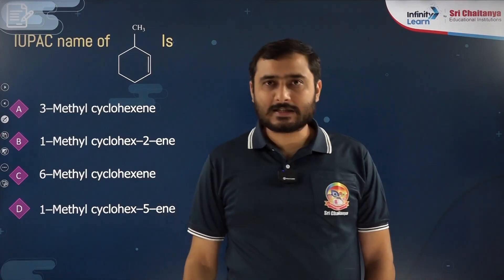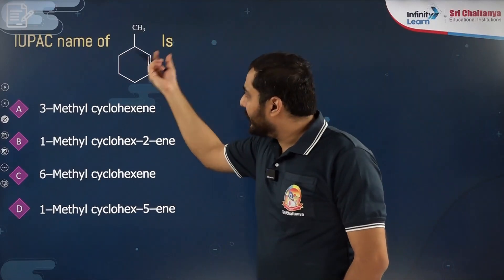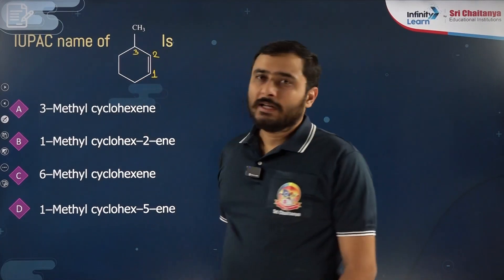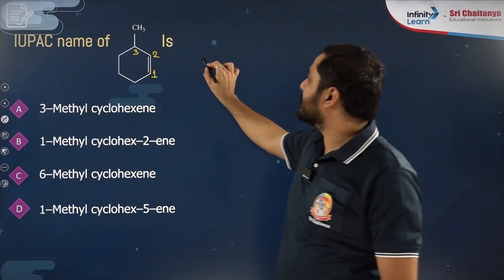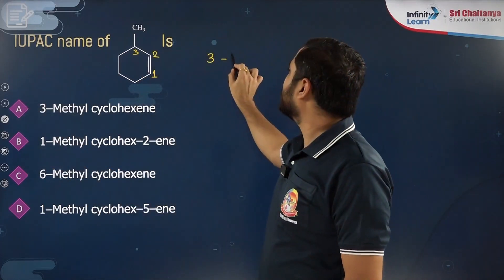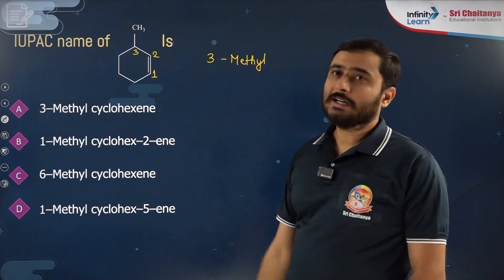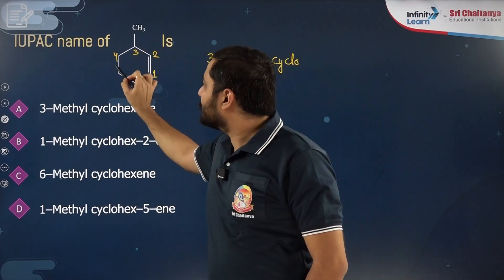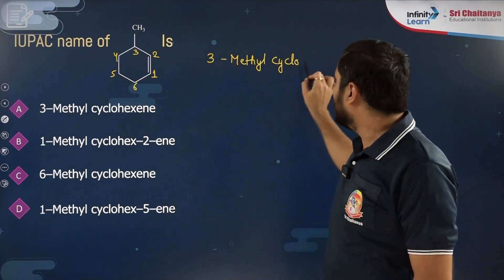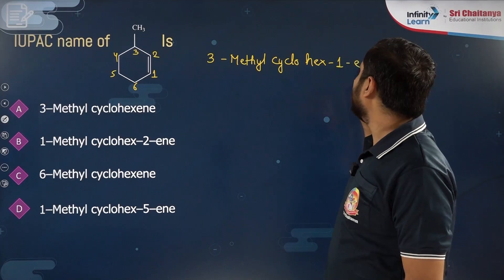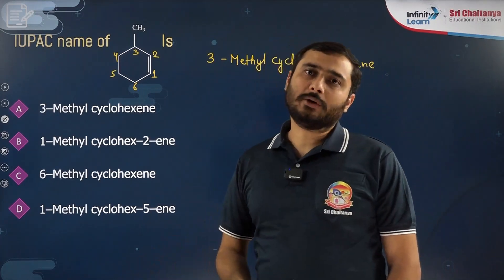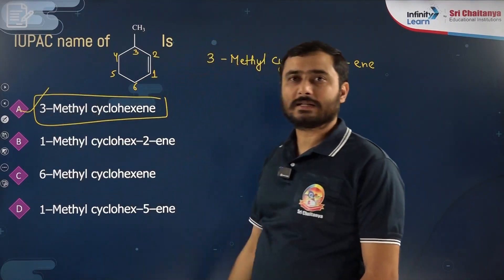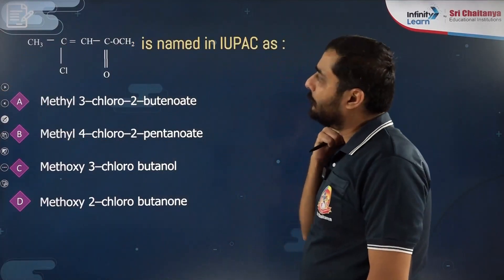Next question involves a cyclic compound. For a cyclic compound, the prefix cyclo is added. The double bond gets higher priority, so numbering starts from the double bond carbon: 1, 2, 3. At third position, methyl is present — so secondary prefix is 3-methyl. The ring has six carbon atoms, giving word root hex. The name is 3-methylcyclohex-1-ene, or simply 3-methylcyclohexene — option A is correct.